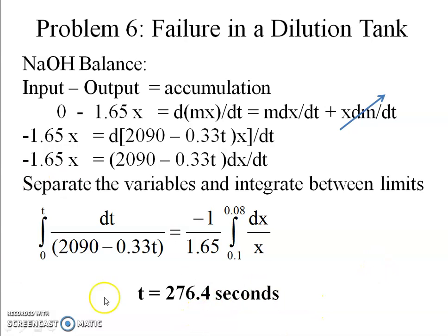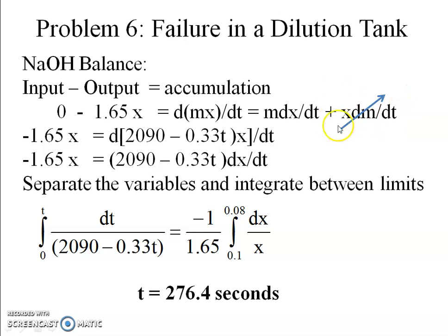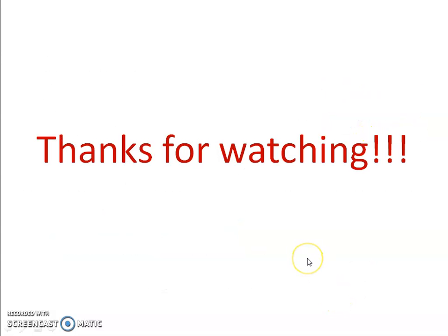You can also verify the validity of the assumption by multiplying 0.33 by t = 276.4 seconds and then by 0.1 — you'll find that the neglected term is indeed very small. I hope you liked this video. Thanks for watching, and if you enjoyed it, please click the like button.